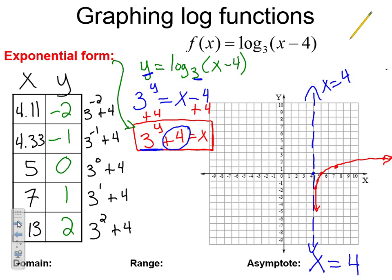For domain and range: since I pick any y value, the range is all real numbers. The domain — since we can't cross our asymptote at x equals 4 and the graph is to the right — is x such that x is greater than 4.